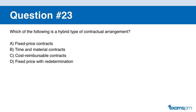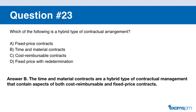Question number twenty-three. Which of the following is a hybrid type of contractual agreement? A: fixed price contract. B: time and material contract. C: cost reimbursable contract. D: fixed price with redetermination. If you said B, you are correct. The time and material contract is a hybrid that contains elements of both cost reimbursable and fixed price contracts. Also note: 'fixed price with redetermination' is not an actual PMBOK term — if you see unfamiliar terms, they are likely not the correct answer.